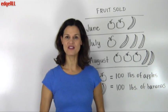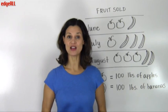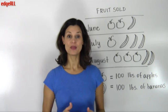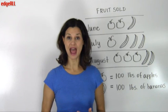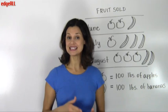Sometimes a pictograph can have more than one symbol and express values for more than one thing. For example, a farm can keep track of apples and bananas sold on the same graph.